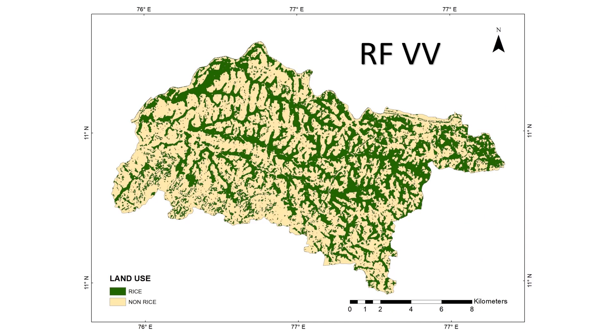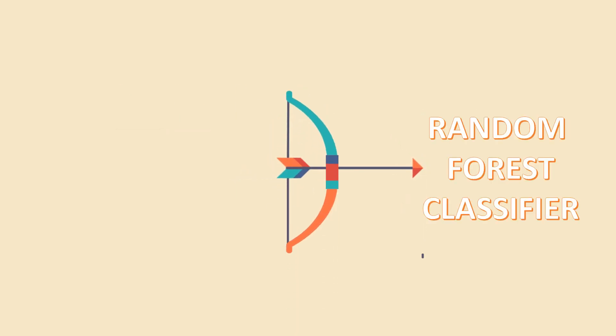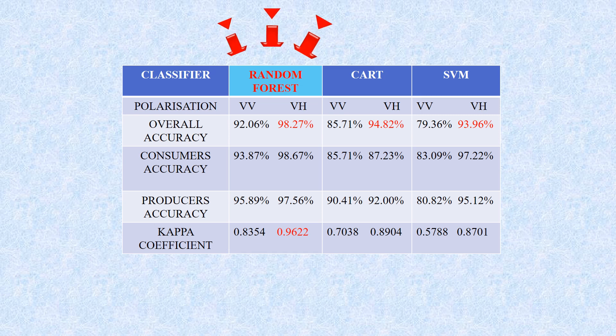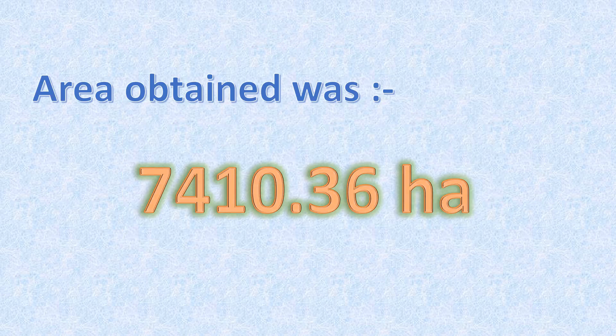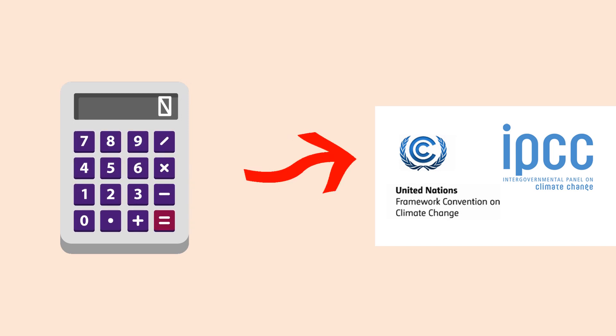These images were obtained from three classifiers for VV and VH polarization. Among these, random forest classifier showed more accuracy and the area obtained using this classifier was used for methane estimation. The area was 1,410 hectares. The methane emission from paddy field was estimated as per IPCC guidelines 2006 tier 1 method.